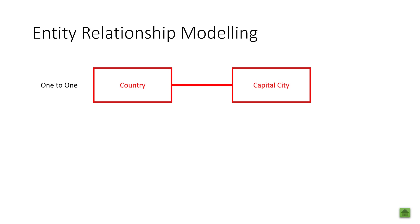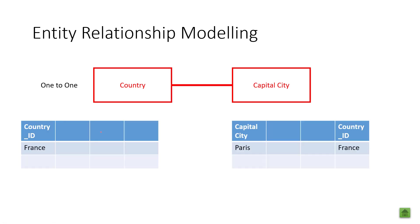With Entity Relationship Modeling we have a one to one relationship and the plan here is to model the real world environment. So for example, here one country has one capital city. A capital city has one country connected to it. You can't have any more than that. You can't have multiple countries having multiple capital cities that are the same.